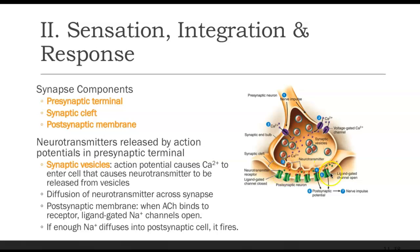For example, acetylcholine can bind to acetylcholine receptors, opening a channel that allows sodium to move through. If enough sodium moves through this post-synaptic cell, we are able to reach threshold, and it fires another action potential or nerve impulse through that nerve or cell.